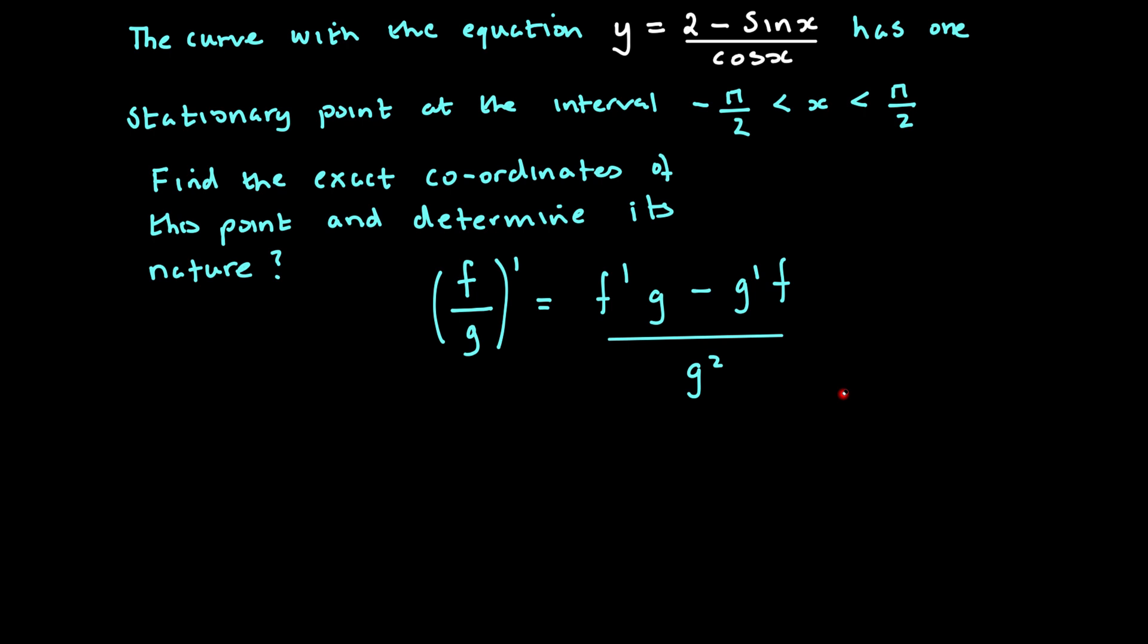The curve with the equation y equals (2 - sin x) / cos x has one stationary point at the interval -π/2 < x < π/2. Find the exact coordinates of this point and determine its nature.